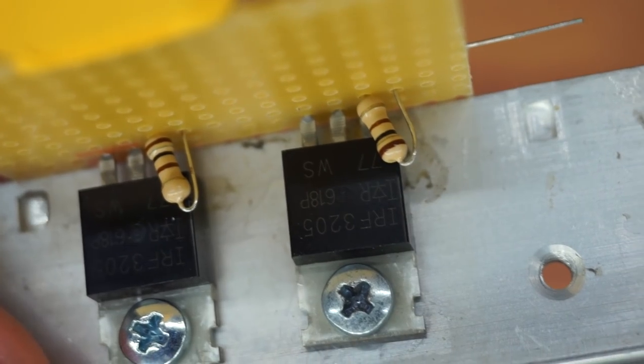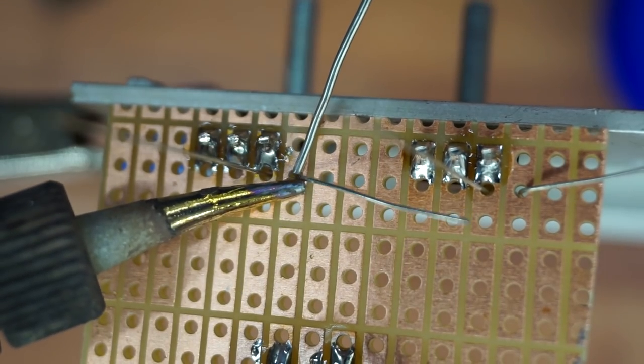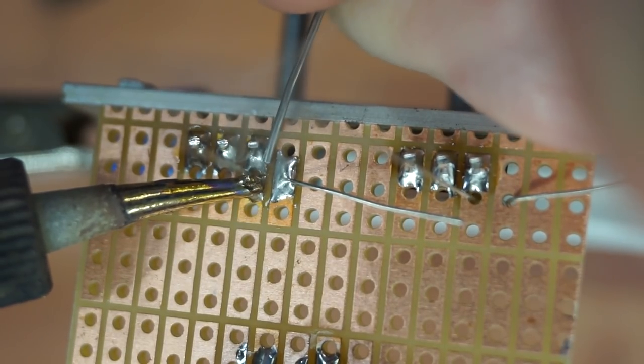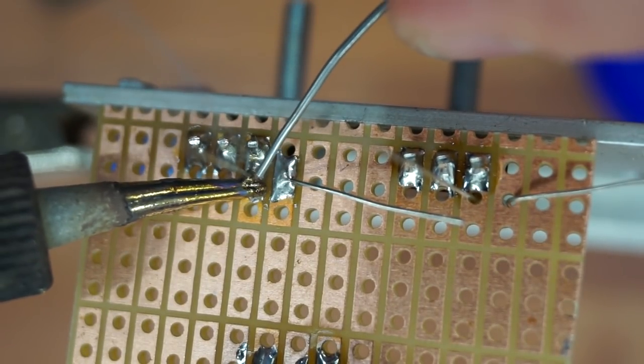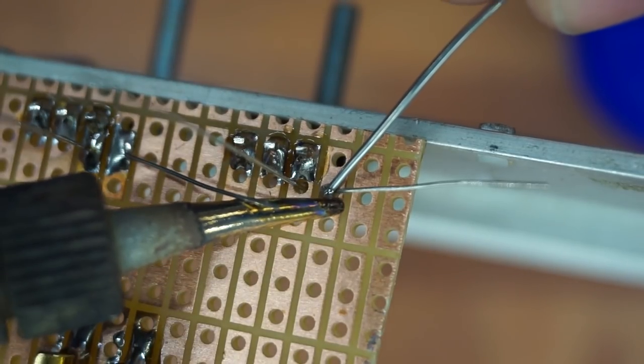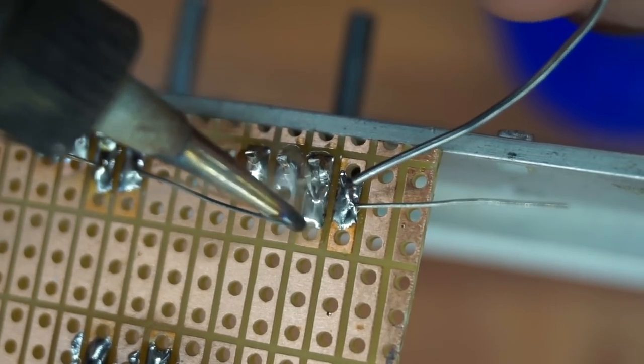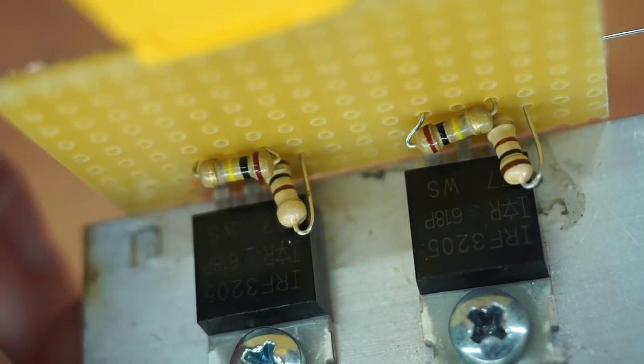Next, I soldered the gate resistors. These are just 22 ohms, they are unnecessary, but recommended.